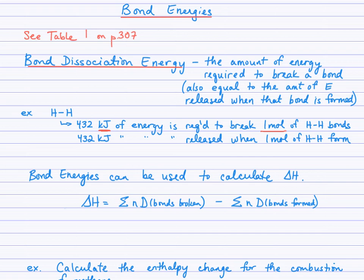So let's now use bond energies to calculate delta H. There's some notation in this formula which may be unfamiliar. This symbol here is summation notation. That means we are going to take N, the number of moles, and multiply by the bond dissociation energy — capital D — which we look up in a table. We do that for all of the bonds that are being broken.